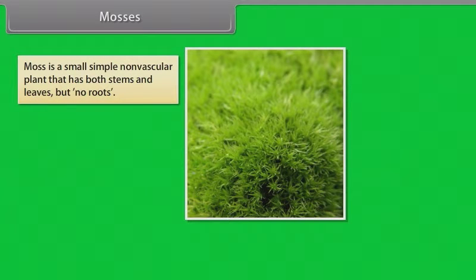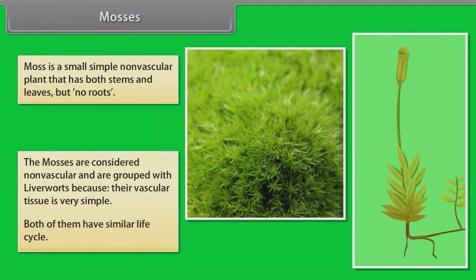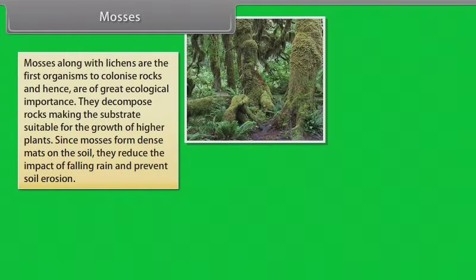Mosses. Moss is a small, simple, non-vascular plant that has both stems and leaves but no roots. The mosses are considered non-vascular and are grouped with liverworts because their vascular tissue is very simple. Both of them have similar life cycle. Mosses along with lichens are the first organisms to colonize rocks and hence are of great ecological importance. They decompose rocks making the substrate suitable for the growth of higher plants. Since mosses form dense mats on the soil, they reduce the impact of falling rain and prevent soil erosion.